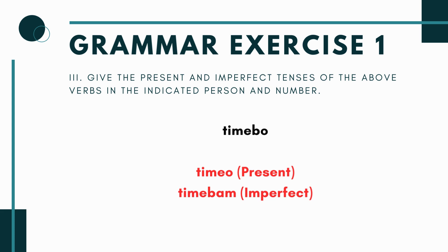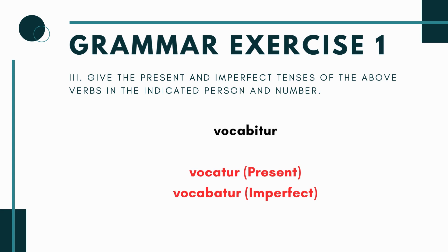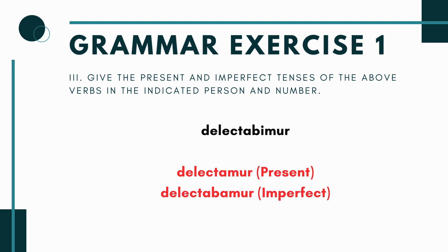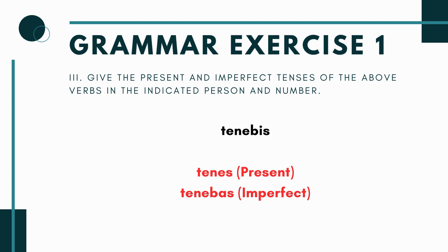The first verb we have is 'timebo' — in the present it's 'timeo' with an '-eo' ending, and in the imperfect it would be 'timebam.' Next you have 'vocabitur' — that would be 'vocatur' in the present and 'vocabatur' in the imperfect. Next you have 'delectabimur' — that would be 'delectamur' in the present and 'delectabamur' in the imperfect.